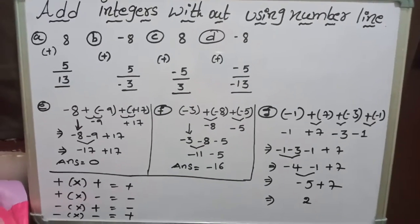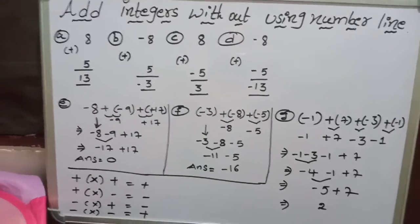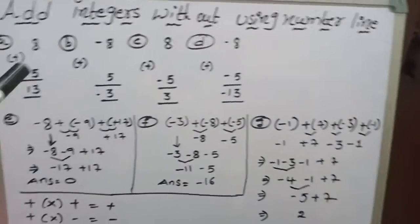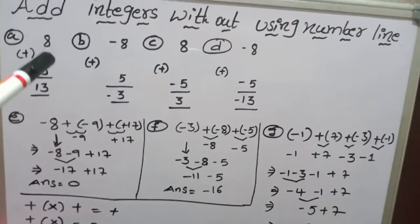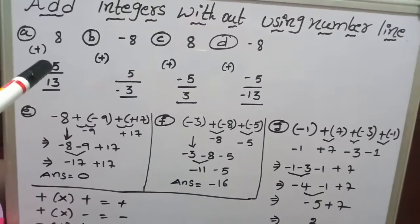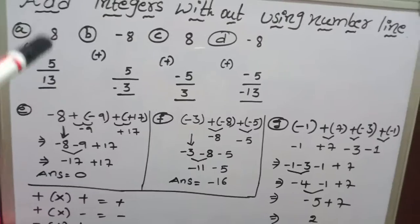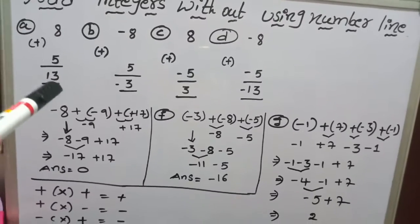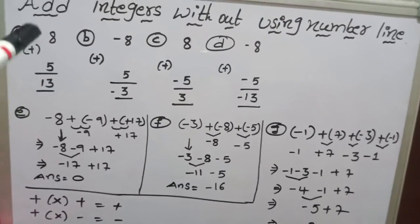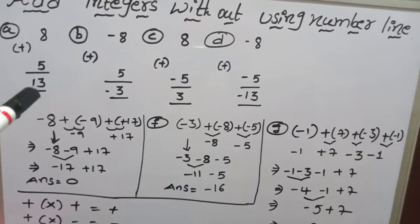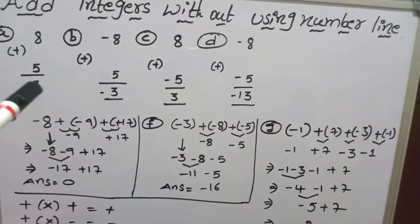Let's see some examples. Coming to example A: 8 plus 5. Here both are positive numbers, so do addition. 8 plus 5 becomes 13. Both are positive, so give the symbol as positive.